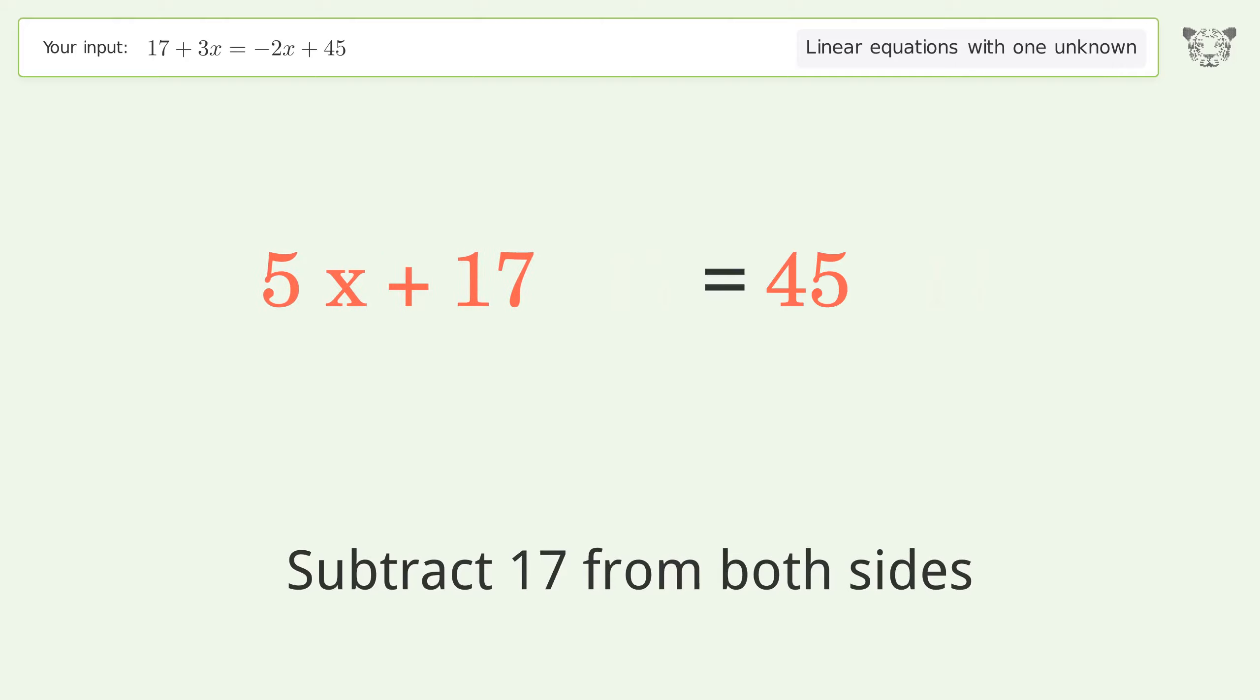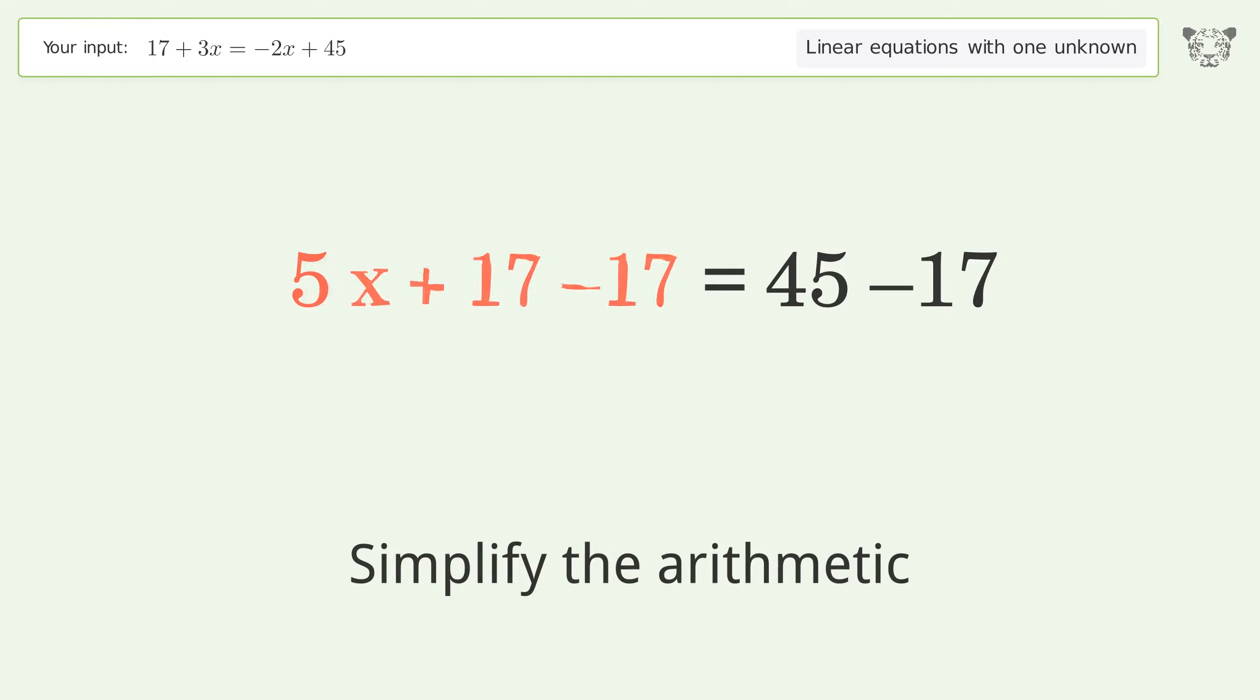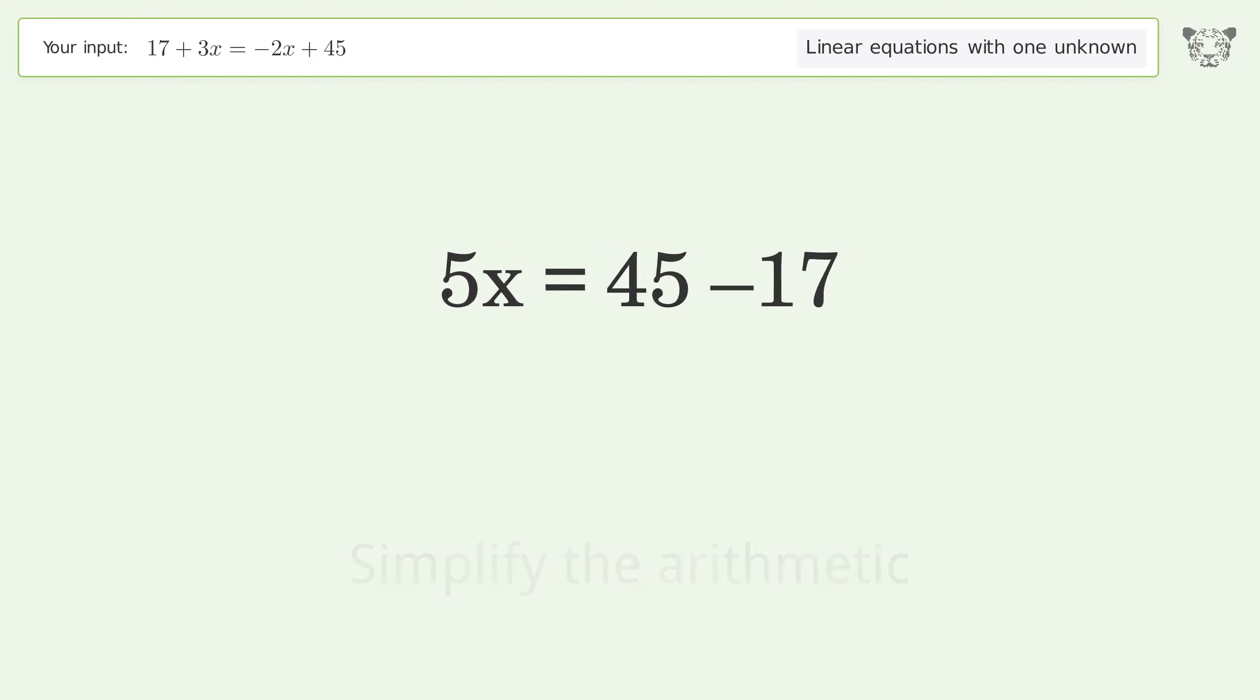Group all constants on the right side of the equation. Subtract 17 from both sides. Simplify the arithmetic.